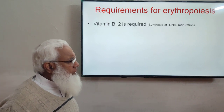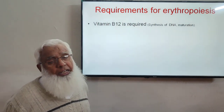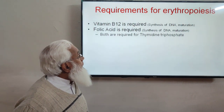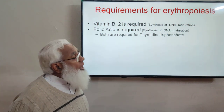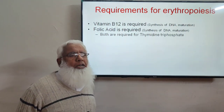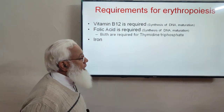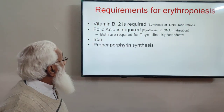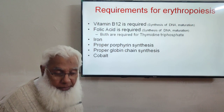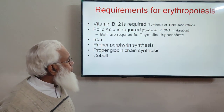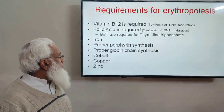Requirements for erythropoiesis include: Vitamin B12 and folic acid, both required for DNA synthesis and RBC maturation — specifically for thymidine triphosphate synthesis. Iron is required for hemoglobin synthesis. Adequate protoporphyrin synthesis and proper globin chain synthesis are also required. Trace elements — cobalt, copper, and zinc — are present in small amounts in the blood and are important for proper erythropoiesis.